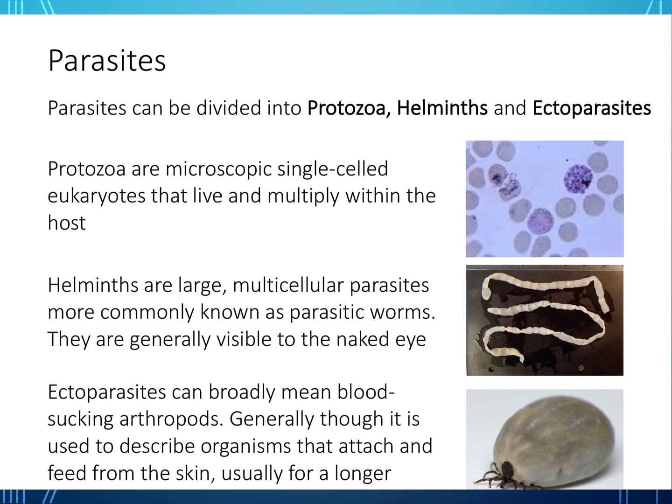Protozoa are microscopic single-cell eukaryotes that live and multiply within the host. Helminths are large multicellular parasites, more commonly known as parasitic worms — generally visible to the naked eye. If you travel abroad where water isn't clean or food is contaminated, these worms can end up in your body. Ectoparasites are blood-sucking arthropods that attach and feed from the skin, usually for a longer period of time.